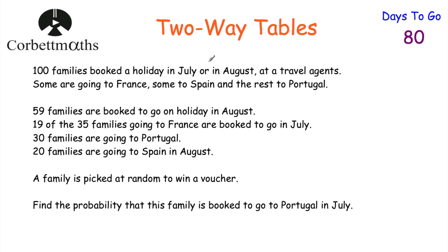We're going to look at a bonus topic: two-way tables, which can sometimes appear in the GCSE higher exam. We're going to focus on questions where you're given a passage and have to create a two-way table. We're told that 100 families booked a holiday in July or August at a travel agents. Some are going to France, some to Spain and the rest to Portugal. 59 families are booked for August. 19 of the 35 families going to France are booked for July. 30 families are going to Portugal. 20 families are going to Spain in August.